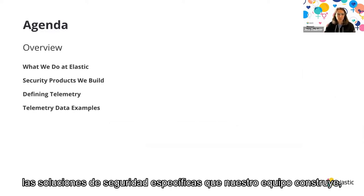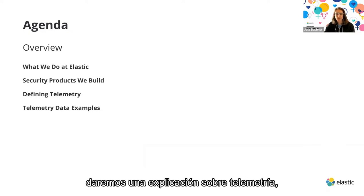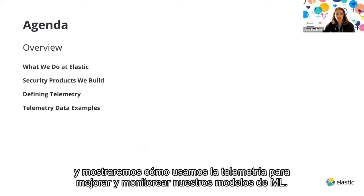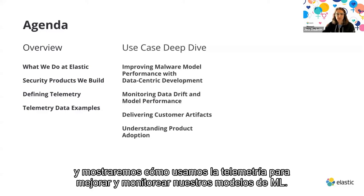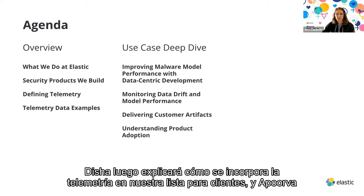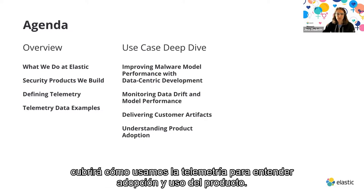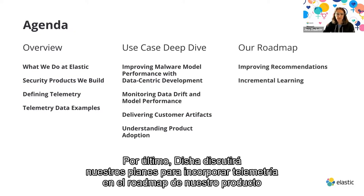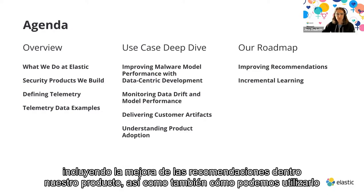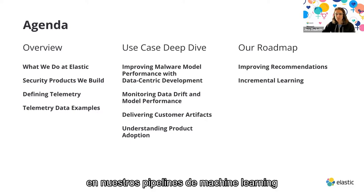To begin, I'll provide an overview of Elastic and the specific security solutions that our team builds, followed by an explanation of telemetry. Sam will discuss how we use telemetry data to improve and monitor our machine learning models. Disha will explain how telemetry is incorporated in our customer list artifacts, and Apurva will cover product adoption and usage. Finally, Disha will discuss our product roadmap plans, including recommendations and incremental learning.